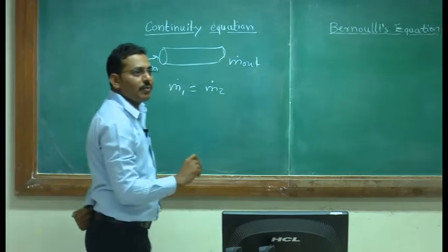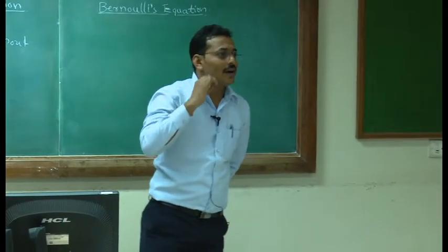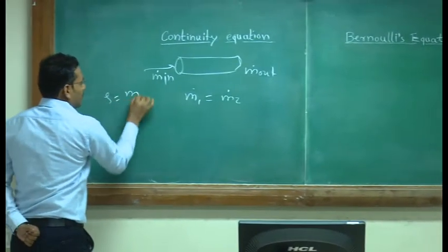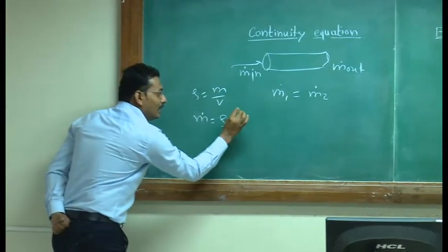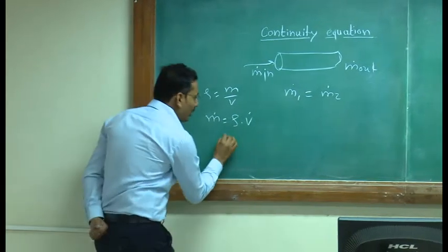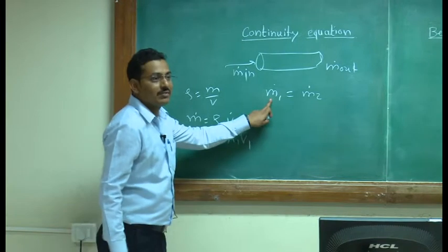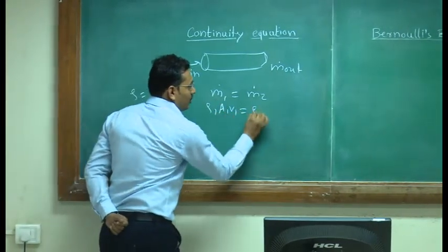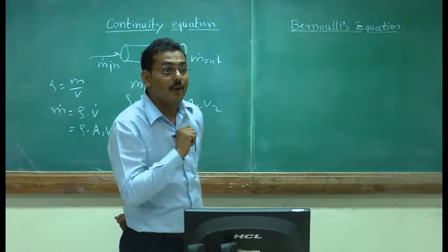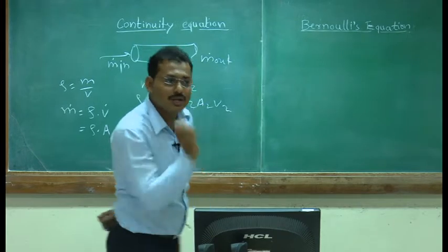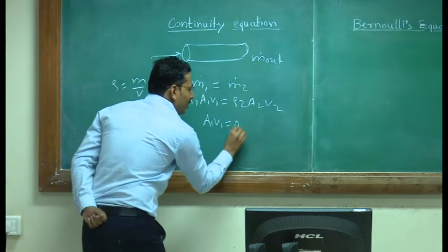Mass flow rate — what is the definition of mass? Density is included in the mass definition. The definition of density is mass upon volume. So mass equals density into volume. Mass flow rate can be written as density multiplied by the volume flow rate, and volume flow rate can be written as the product of area into velocity. So here comes our equation: rho1 * A1 * V1 = rho2 * A2 * V2. Since the flow is incompressible, density should not change, meaning rho1 equals rho2. So we can write the equation as A1 * V1 = A2 * V2.